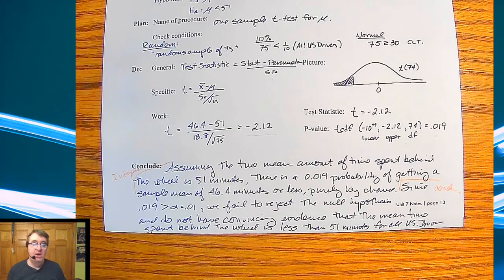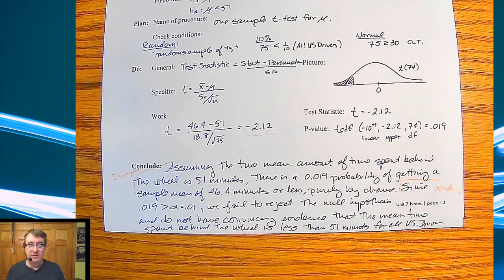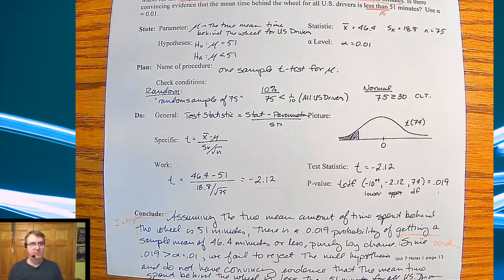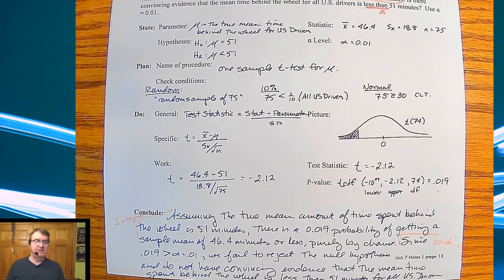So tomorrow, we're going to formalize this with all four steps for doing significance tests for means. We're also going to talk about the link between significance tests and confidence intervals, and then probably take a quiz after that. And then we'll go on to difference of means and means of differences. So lots to look forward to. We'll talk to you soon. Bye.